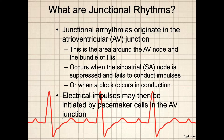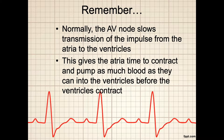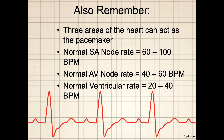Normally, the job of the AV node is to slow impulse transmission from the atria to the ventricles, giving the atria time to contract and pump blood into the ventricles before ventricular contraction. The heart has backup fail-safe measures in case of pacemaker failure. Normally the SA node is the pacemaker at 60 to 100 beats per minute. If that fails, the AV node takes over at 40 to 60 beats per minute, and if both fail, there is a ventricular rate of 20 to 40 beats per minute.